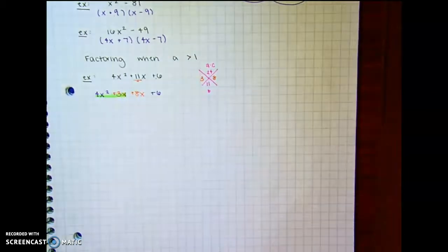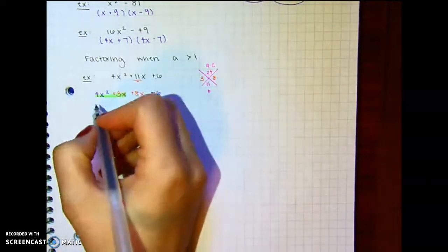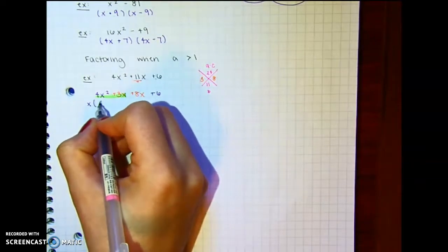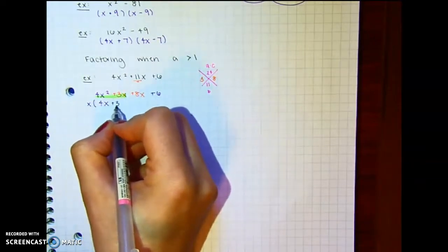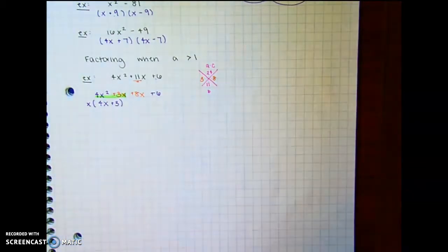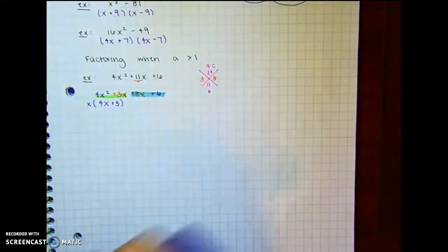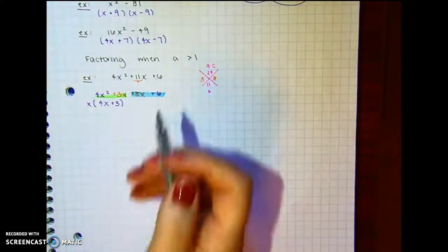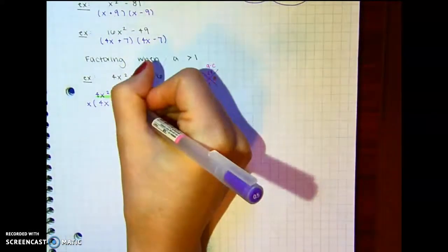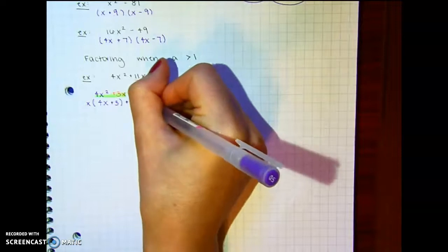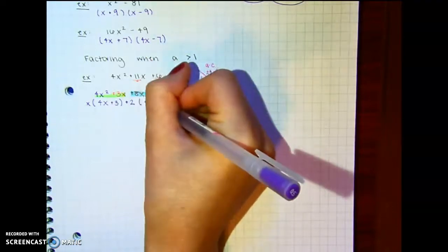And what's the greatest common factor of this group? So the greatest common factor there is just x, and we're left with 4x plus 3. And then what's the greatest common factor of the second group? And that's going to be 2. Yeah, because 8 and 6 are divisible by 2. So make sure you put the plus 2. A lot of students forget that. 8 divided by 2 is 4x, and 6 divided by 2 is 3.